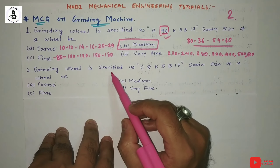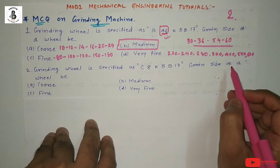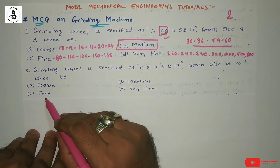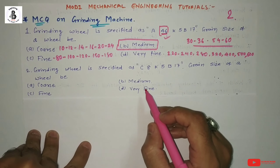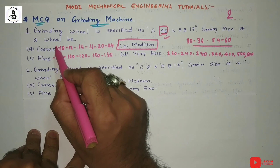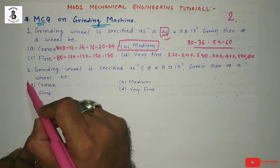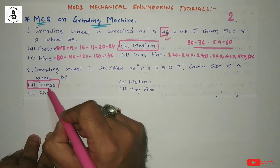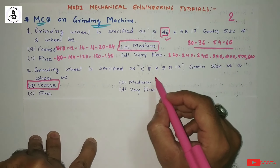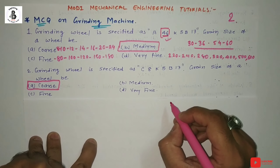Question 2: A grinding wheel is specified as C8K5B17. What is the grain size of the wheel? Option A: coarse, Option B: medium, Option C: fine, Option D: very fine. According to the previous classification, the grain number is 8, which is below 10, so it falls on the coarse side. The answer is option A: coarse. If you want to learn in detail for all kinds of grinding wheel specifications, you will find a link in the description.